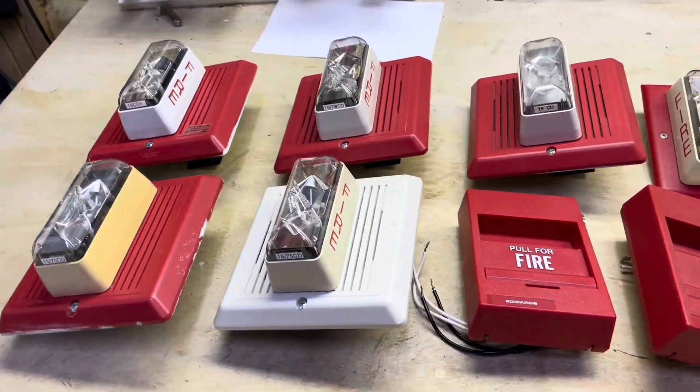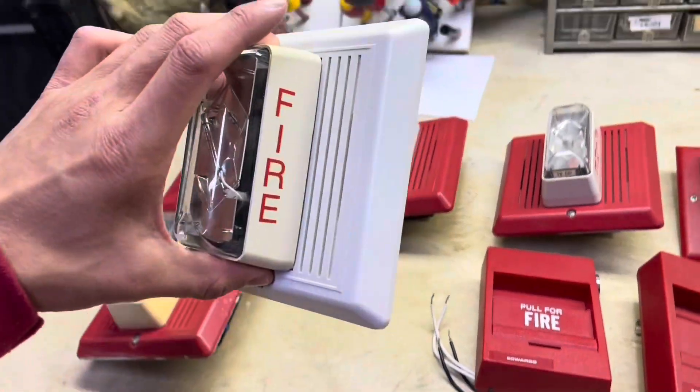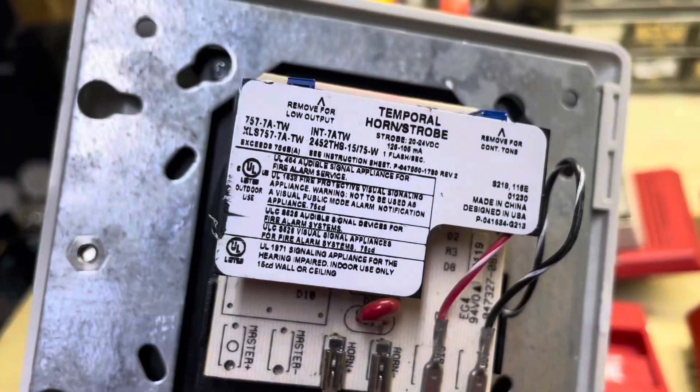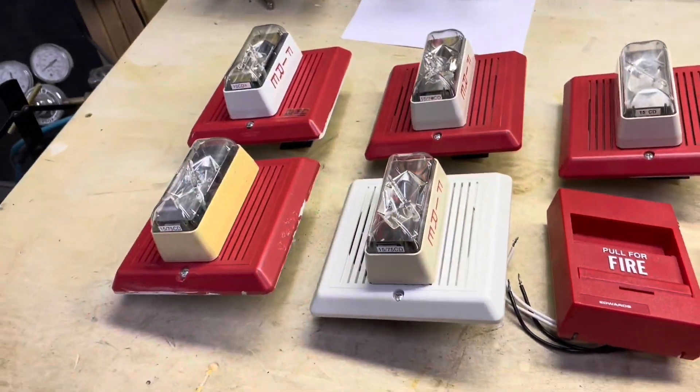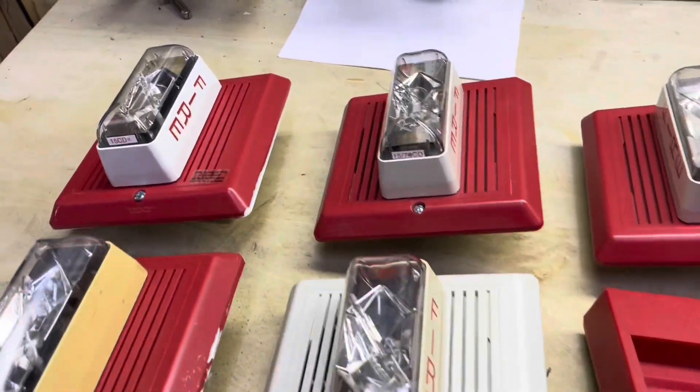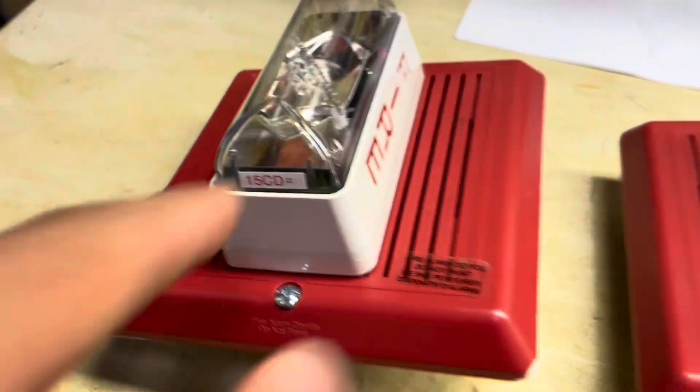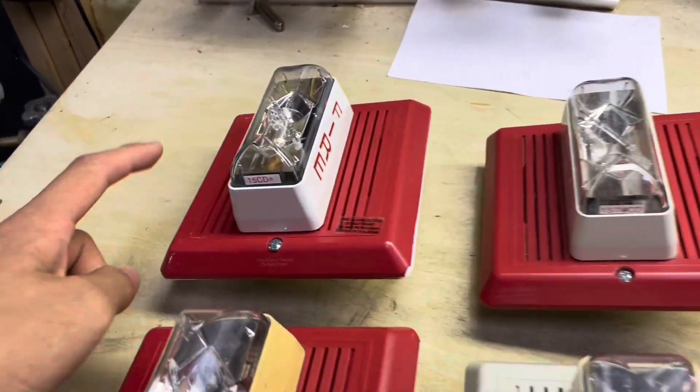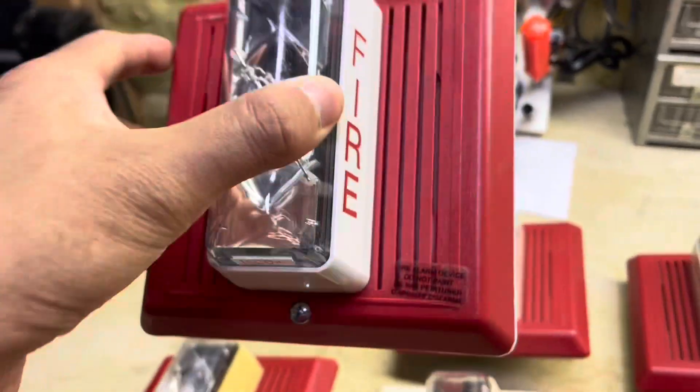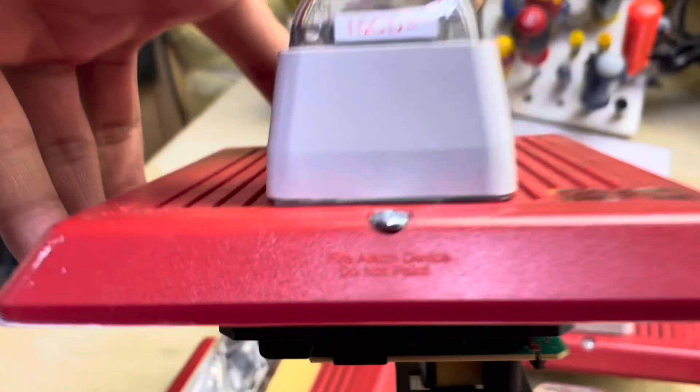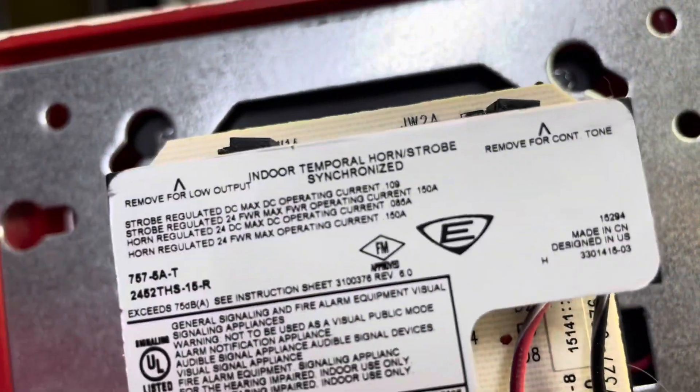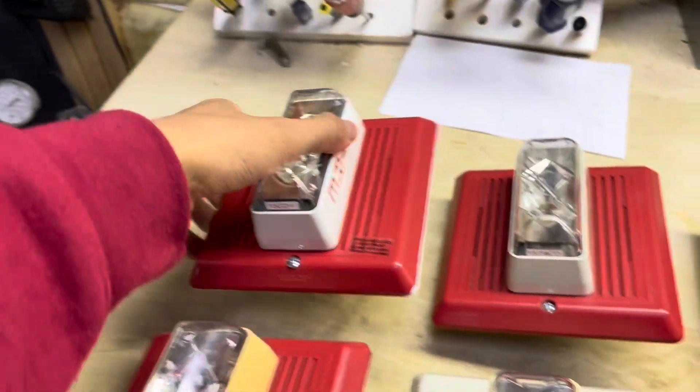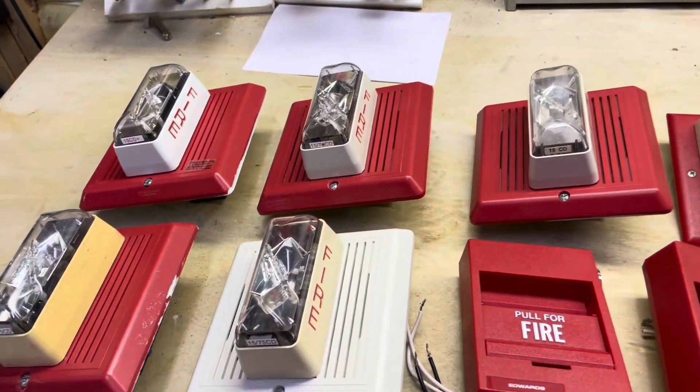These right here are the Edwards 757 Integrity Series of horn strobes. You can see here on the back, these are not going to synchronize with each other except for these two, because these older devices are non-syncable. But the ones with the red labels are considered enhanced, so these ones are pretty new, especially this one. Here's the modern Edwards logo. I think these are still being manufactured, but the rest of these are kind of old.